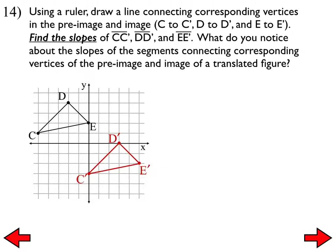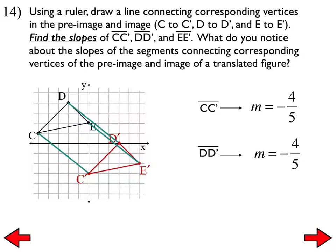One other thing happens when translating shapes. If I connect C to C', D to D', and E to E' and find the slopes of those connecting segments, they are all the same — in fact, they are all negative four-fifths. So lots of things happen under a translation.